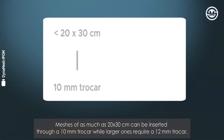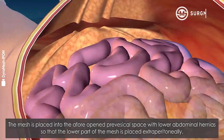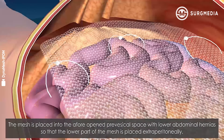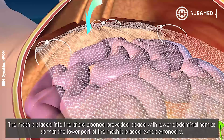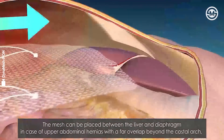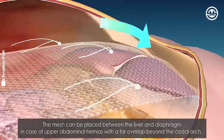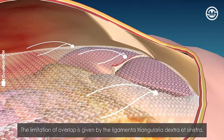Meshes of as much as 20 by 30 centimeters can be inserted through a 10 millimeter trocar, while larger ones require a 12 millimeter trocar. The mesh is placed into the afore-opened pre-vesicle space with lower abdominal hernias, so that the lower part of the mesh is placed extraperitoneally. The mesh can be placed between the liver and diaphragm in case of upper abdominal hernias, with a far overlap beyond the costal arch. The limitation of overlap is given by the ligamenta triangularia dextra et sinistra.